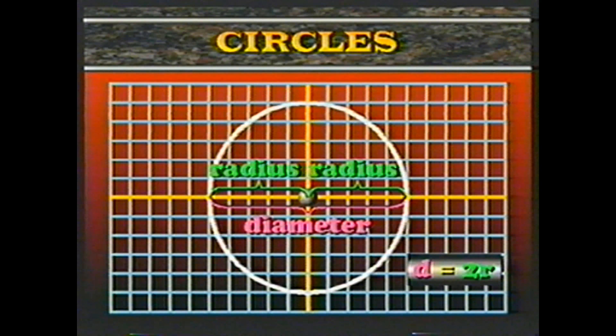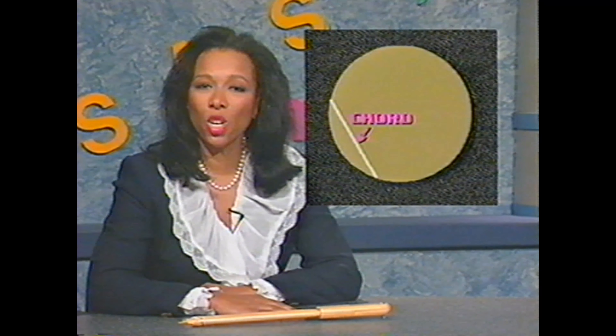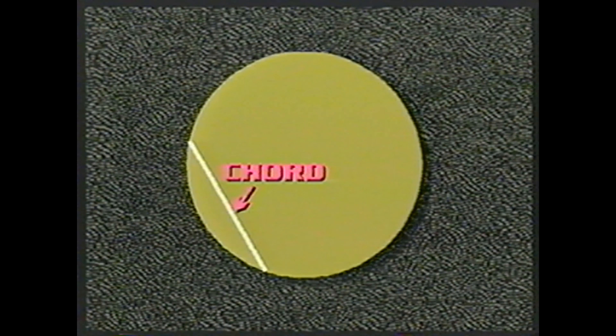How long is the radius of this circle? The radius of this circle is the distance from the center to any point on the circle, which is five. You should remember the words center and radius — we plan to refer to them throughout this entire tape. The plural of the word radius is radii.